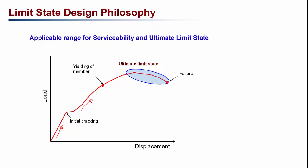Because the ultimate limit state deals with structural integrity, loss of life, and significant financial loss, we must ensure the probability of its occurrence is very small. The serviceability limit state is before the yielding of the member — during day-to-day use, the structure is not yielding. So for day-to-day loading, the structure must satisfy the serviceability limit state, and for ultimate loading, it must satisfy the ultimate limit state.